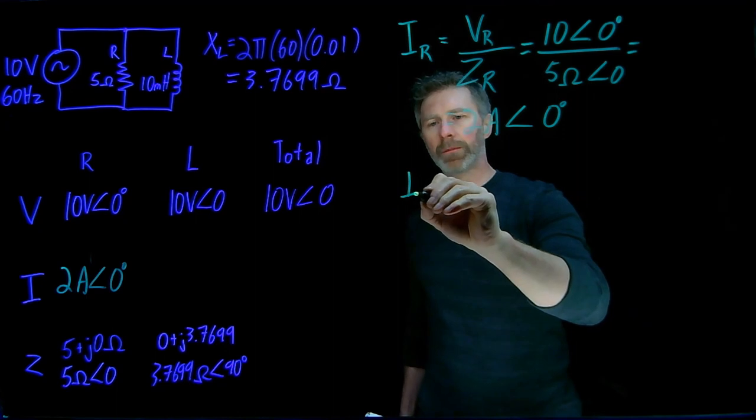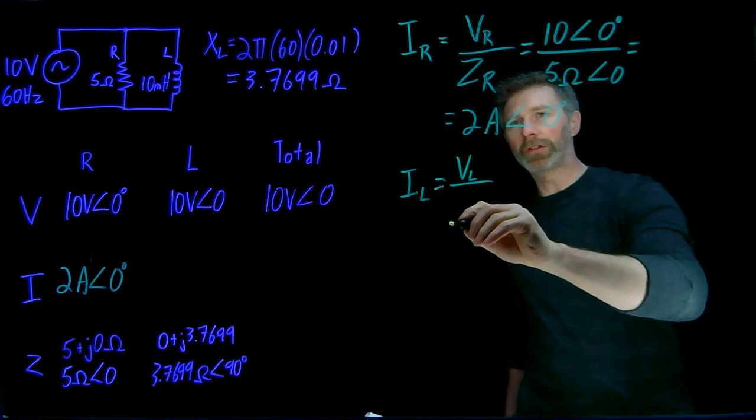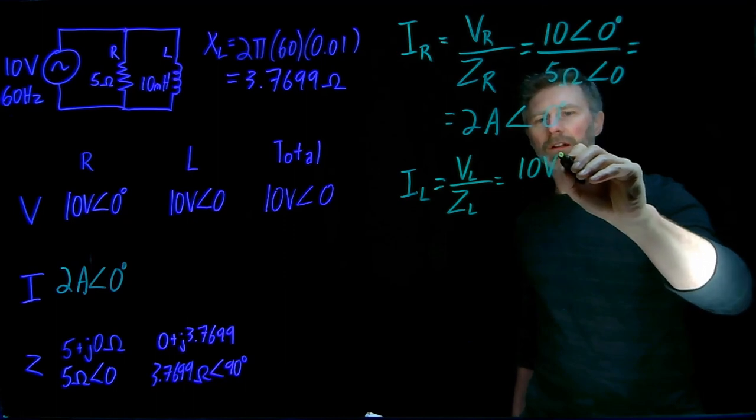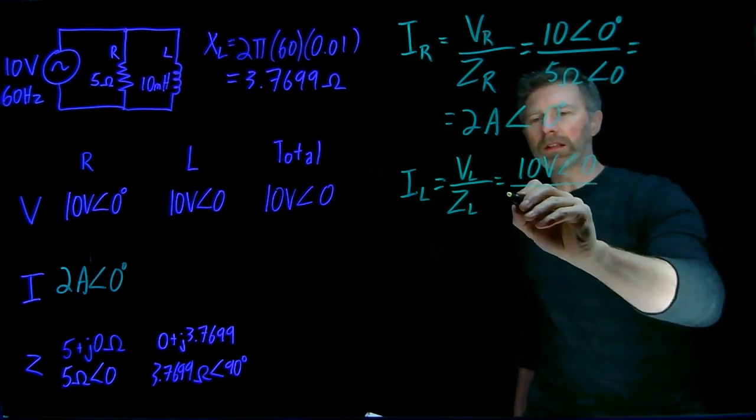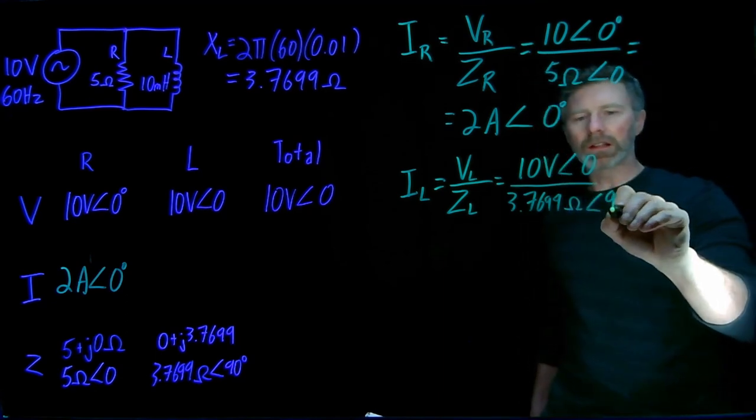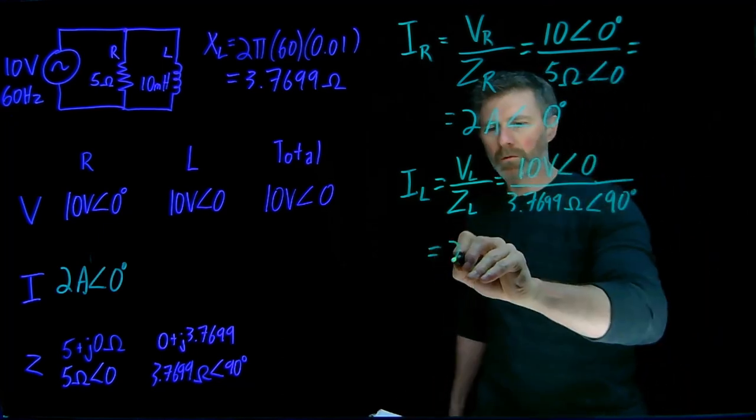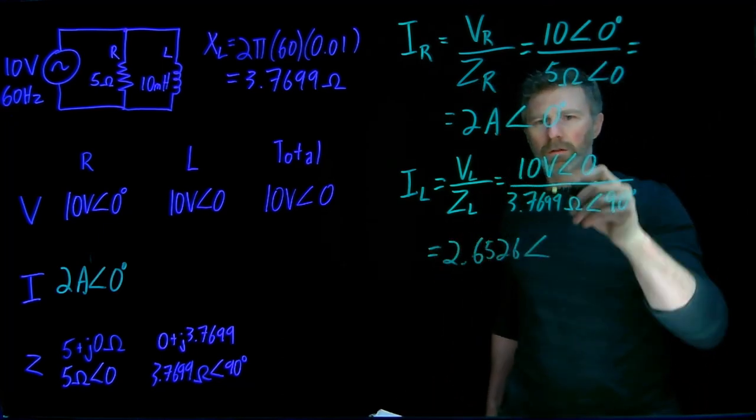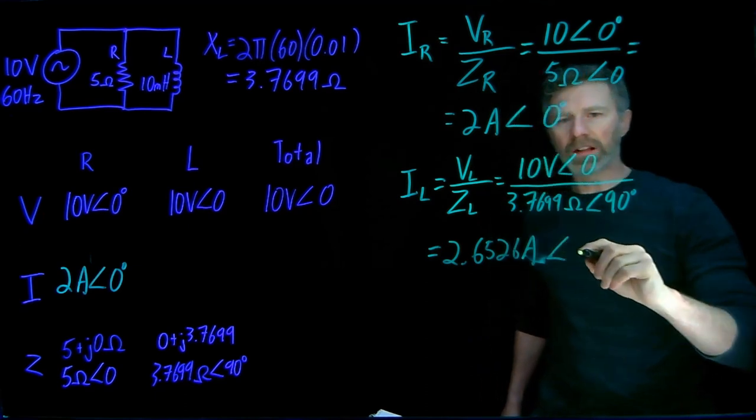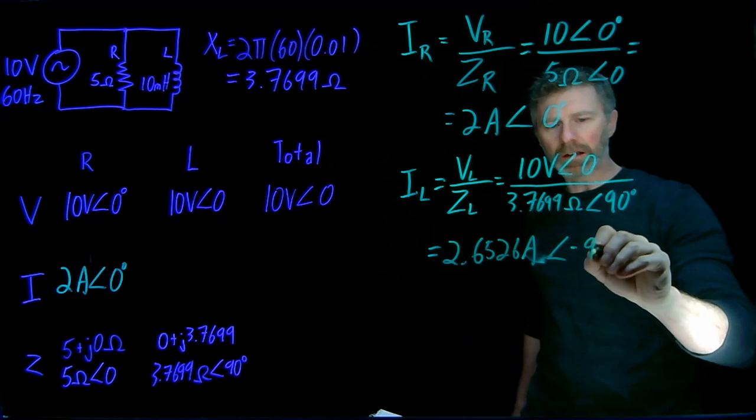For the inductor it's the same type of calculation. The voltage across the inductor divided by the impedance of the inductor. It's that same voltage because everything's in parallel, and the impedance is 3.7699 ohms. This time the phase angle is 90 degrees instead of zero degrees for the resistor. Dividing 10 by 3.7699 gives me 2.6526 amps, and to get the phase angle I take the numerator angle minus the denominator angle, which gives me minus 90 degrees.